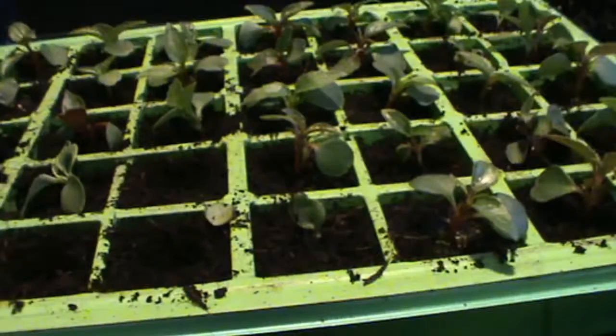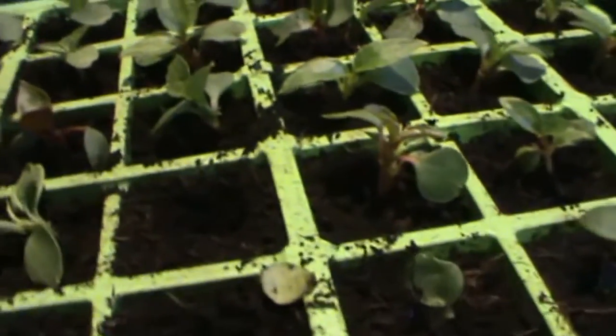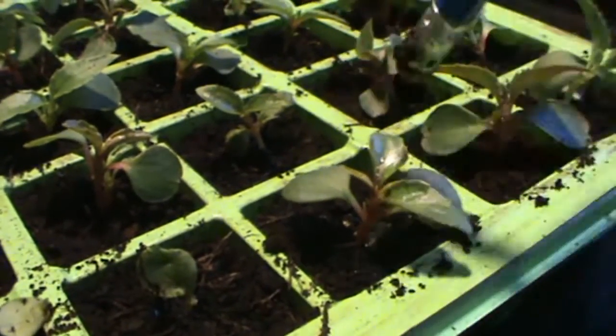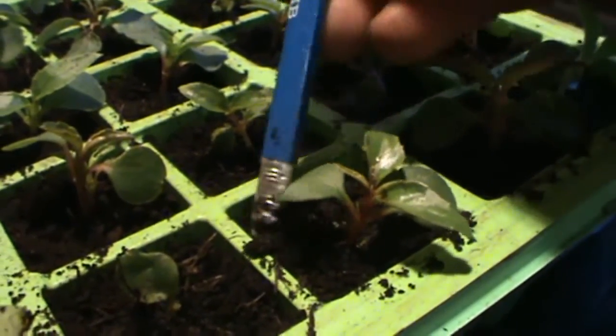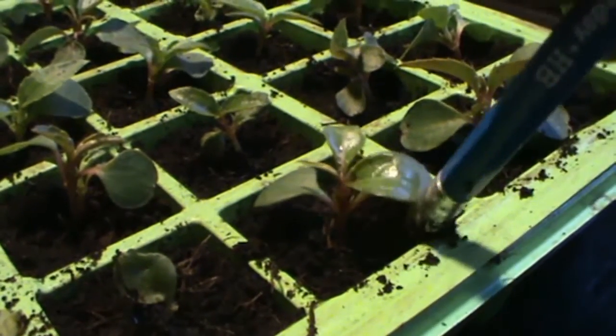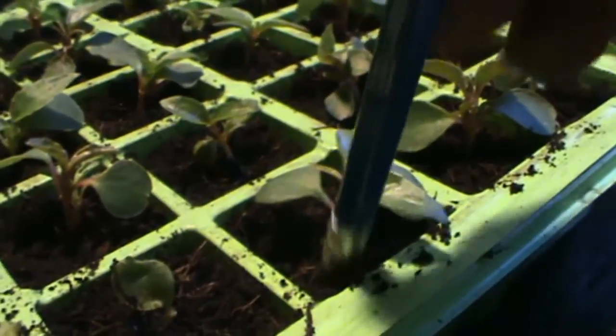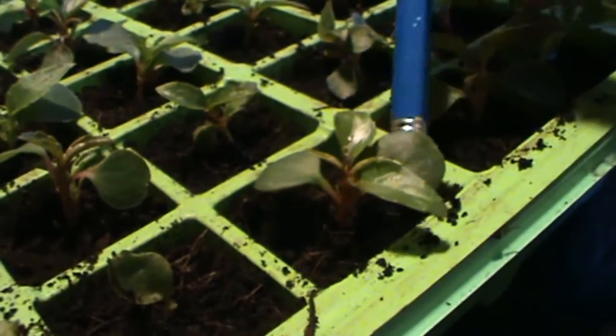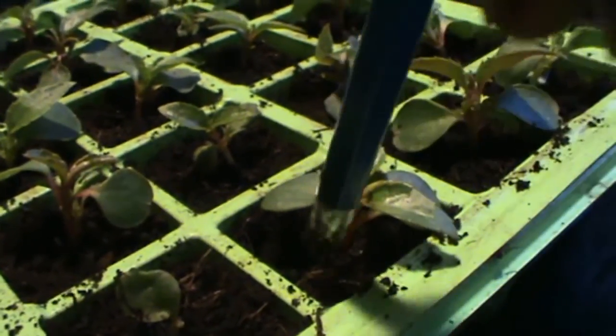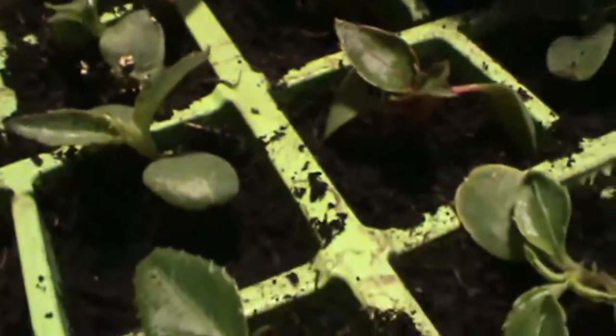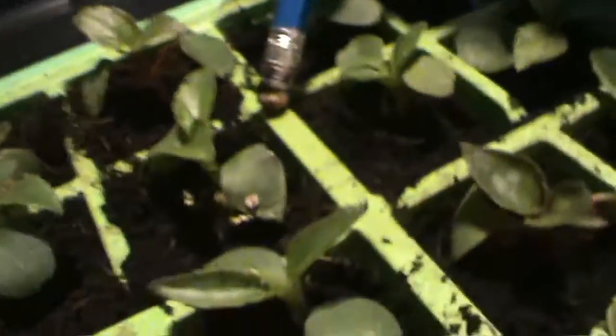There we go, 36 plants - well, 34 actually, a couple didn't make it. All we've got to do is just gently push them down. I'm using a pencil because my fingers are too fat to get into the little seed modules. Just giving them a gentle tap down, they've been well watered.